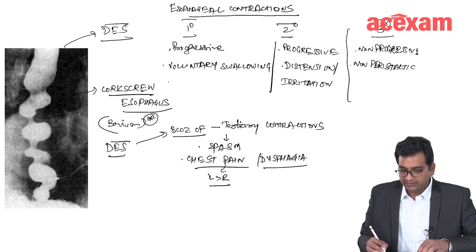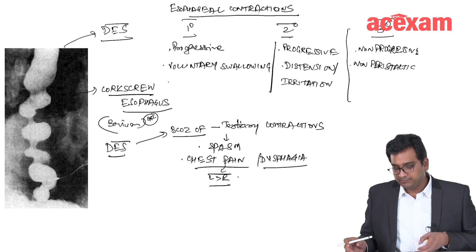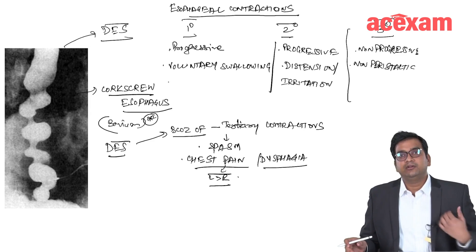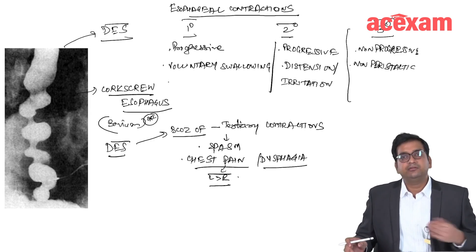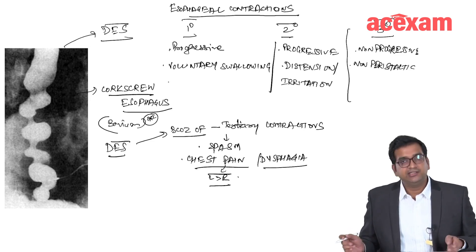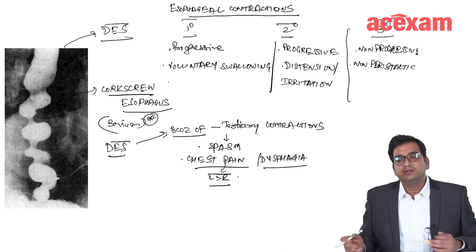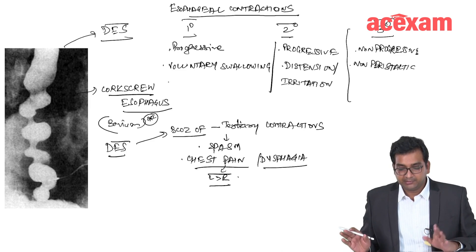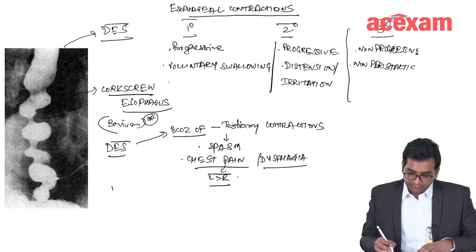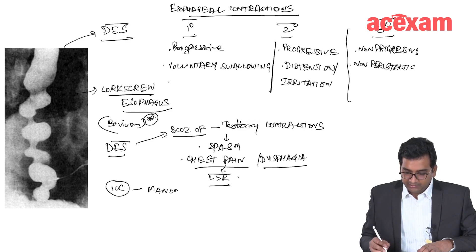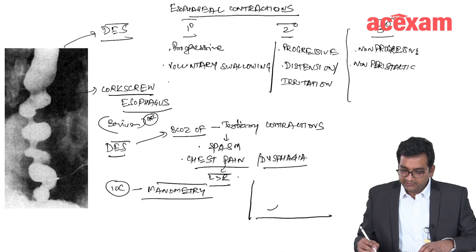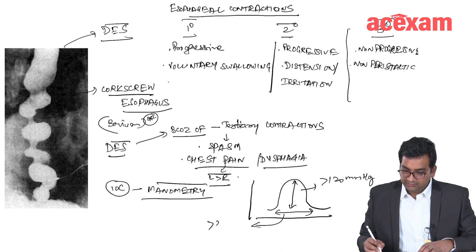The chest pain in diffuse esophageal spasm is more towards the left side. A patient presenting with chest pain and dysphagia may be referred to a cardiologist suspecting angina. If ECG is normal, manometry or barium swallow should be done as diffuse esophageal spasm is possible. The investigation of choice is manometry.